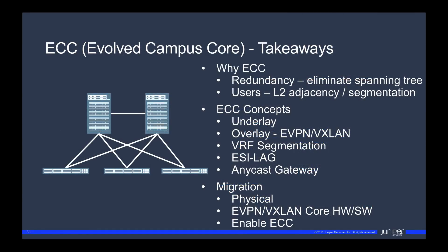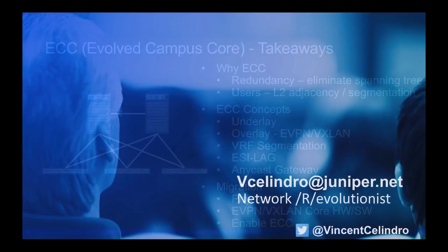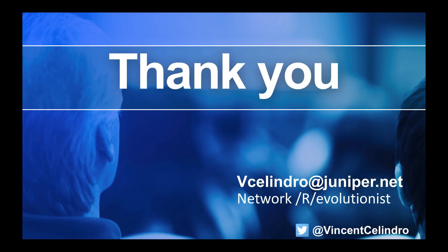ECC takeaways. Why ECC? Redundancy and users — eliminating spanning tree and providing layer 2 adjacency, as well as segmentation and flexibility. The five ECC concepts: underlay, overlay with EVPN VXLAN, VRF segmentation, ESI lag, and anycast gateway. Lastly, migration — the three simple steps to move into an Evolved Campus Core framework: physical topology evaluation, core devices and software capable of EVPN VXLAN, then just enabling ECC. After that, you'll start to enjoy all the benefits the evolved campus core framework has to offer over that old traditional three-tier architecture. Thank you. If you have any questions or comments, feel free to contact me or hit me up on Twitter.